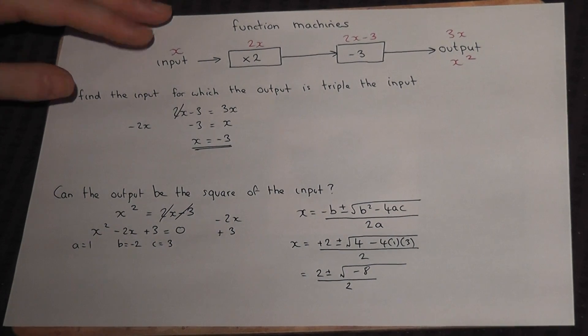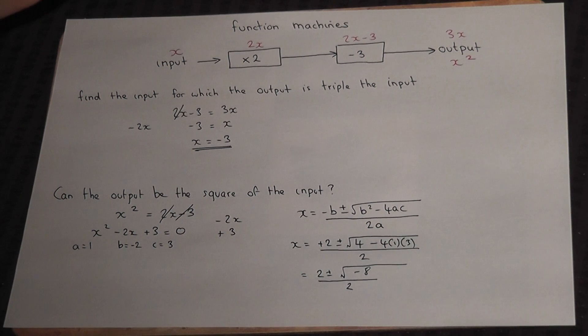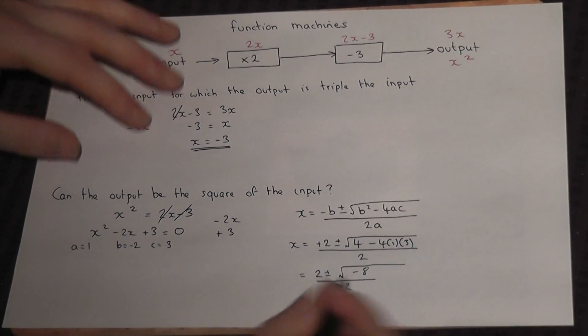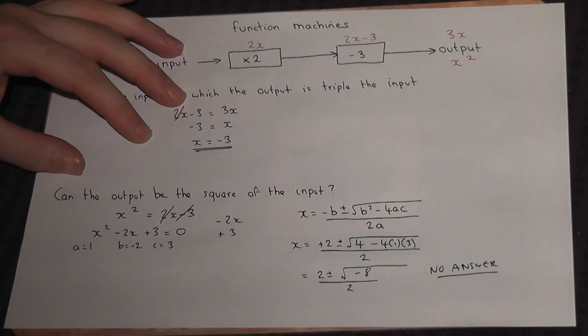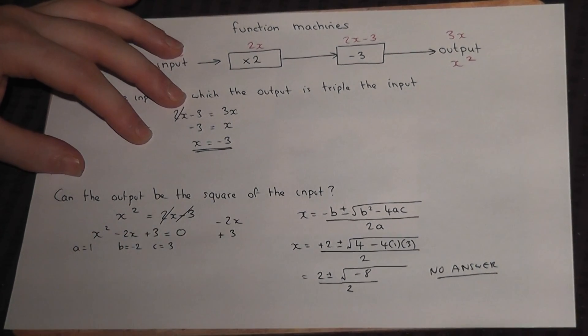Now then, it is not possible to square root a negative, at least at GCSE. So because we cannot square root it, there's no answer. And so because there is no answer, then the output cannot be the square of the input.